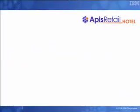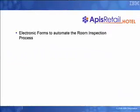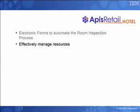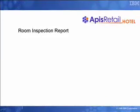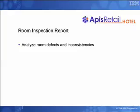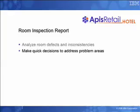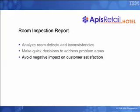In this scenario, a nationwide hotel chain, EPIS Retail Hotel, requires an electronic form to help them automate their room inspection process. The organization needs to automate this process in order to more effectively manage their resources. A core component of the Hotel Room Inspection Process is the Room Inspection Report — a form that contains important information used by management to analyze room defects and inconsistencies and make quick decisions on how to address such potential problem areas to avoid negative impact on customer satisfaction.